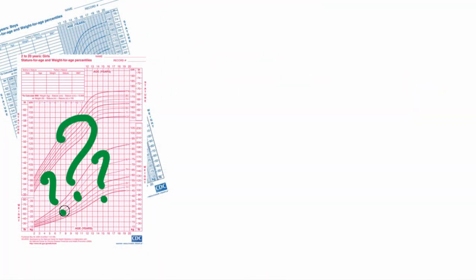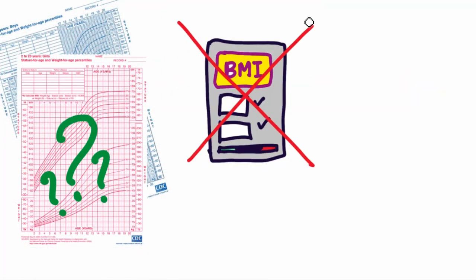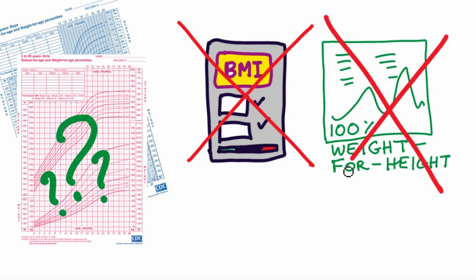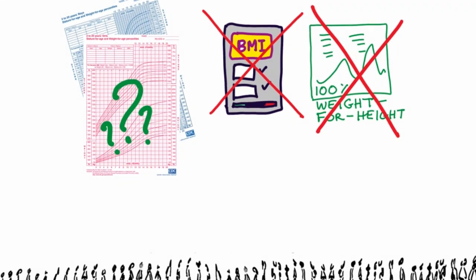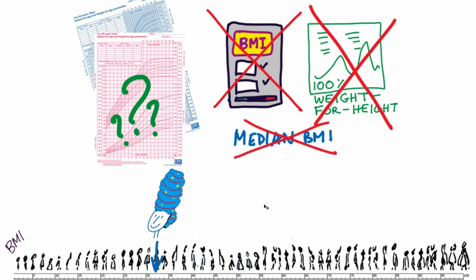What if you don't have any good data to plot on a chart? What you should absolutely not do is reach for a BMI calculator or a 100% weight for height number. That would be a middle-size-fits-all approach, which might yield a figure that is way off your child's individual needs.